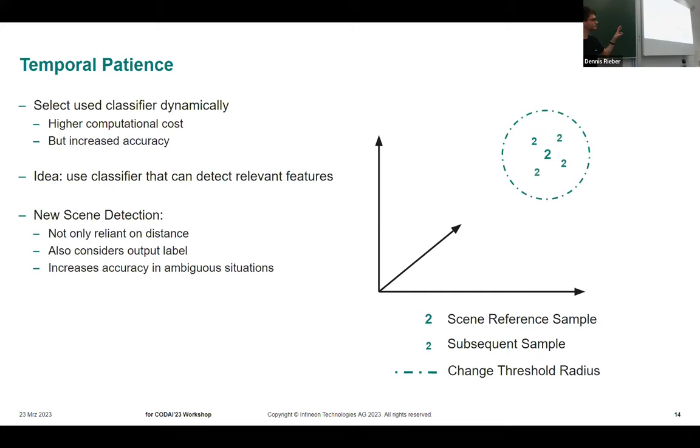We are hoping to increase the accuracy in these ambiguous situations. That looks somewhat like this: we still have these scenes with their threshold, but we can trigger new scenes with samples within the threshold if they change the label. Then we have some kind of overlap between these scenes.